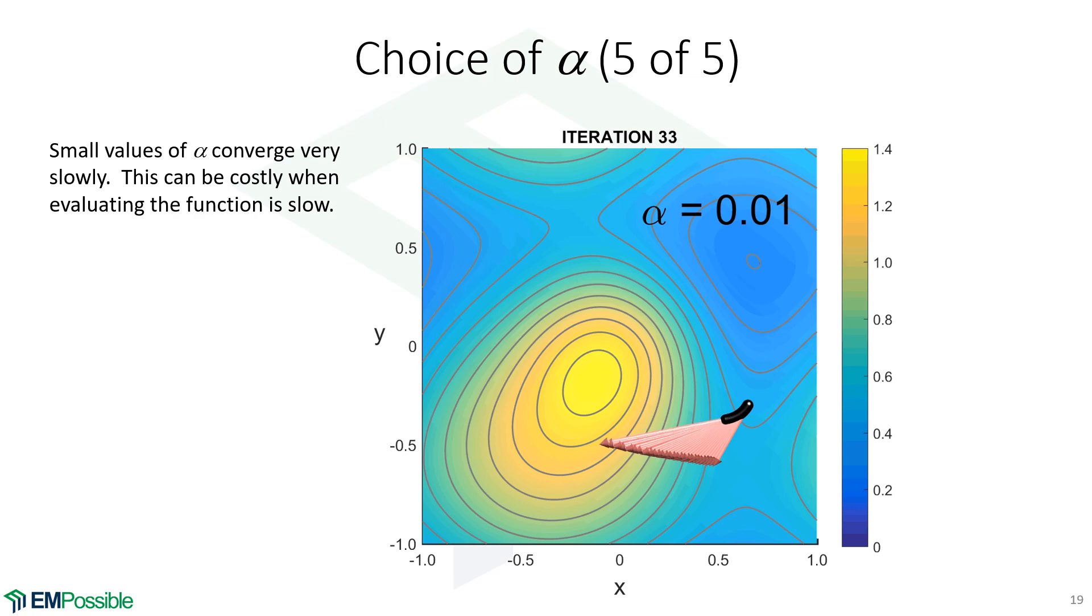Some other smarts you could think about putting in your code is pick a large value, and if it seems to be oscillating, make the value go smaller, make it adaptive in some way.